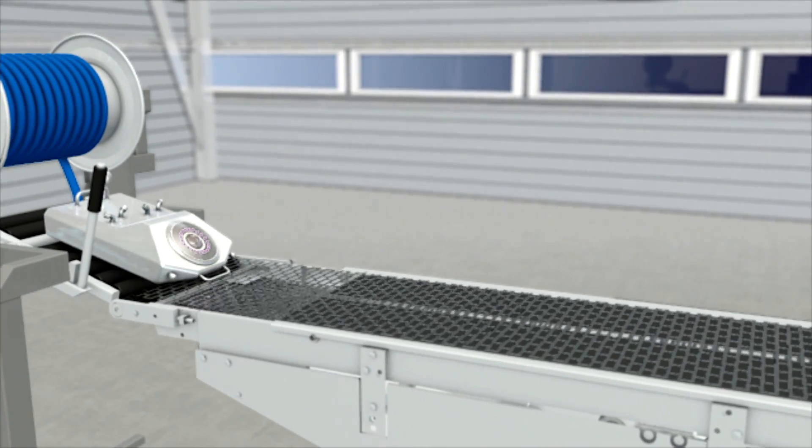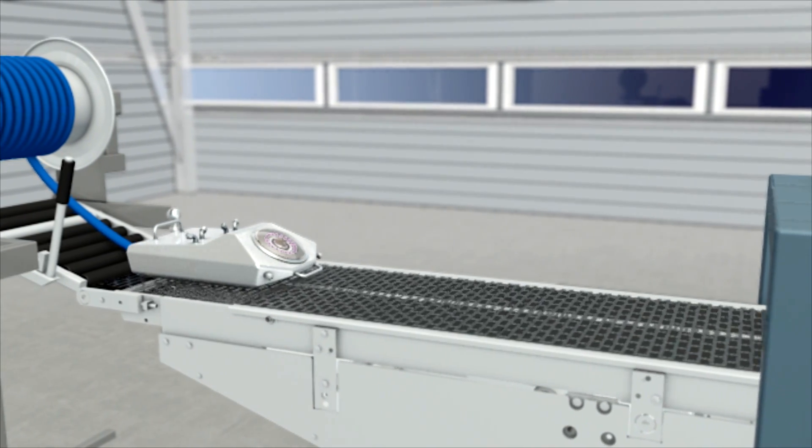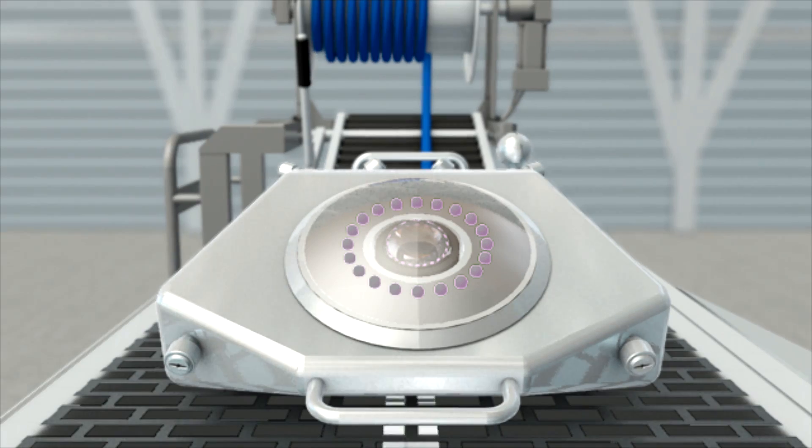Since the robot knows the speed of the belt and the CAD data of the machine to be cleaned, it creates a precise image of its surroundings. That way it knows exactly where it is at all times.